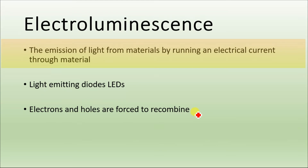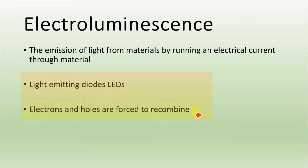Electroluminescence is the emission of light from materials by running an electric current through them. This is a forced process — we force the electrons to recombine with the holes using an external battery or electric current. During this process, photons are emitted.